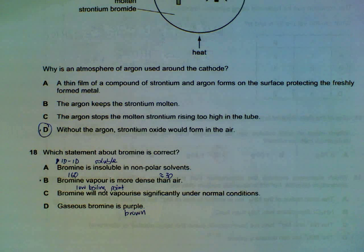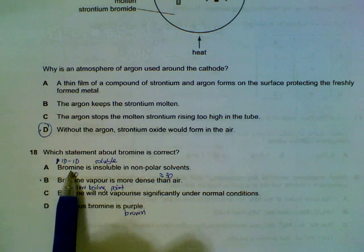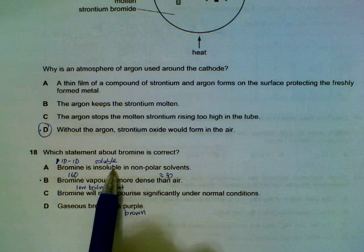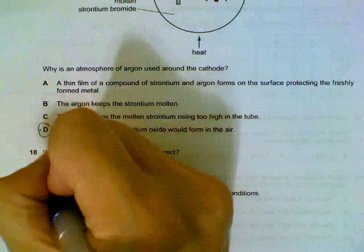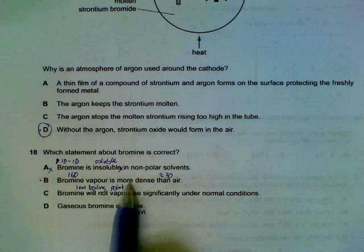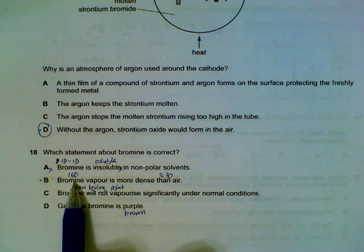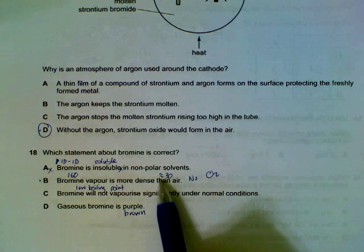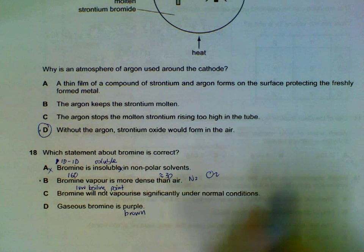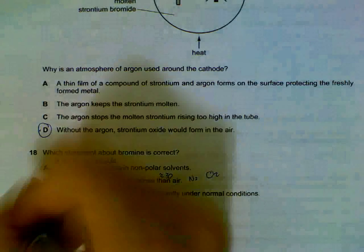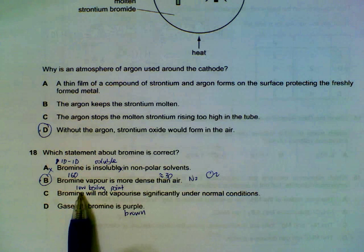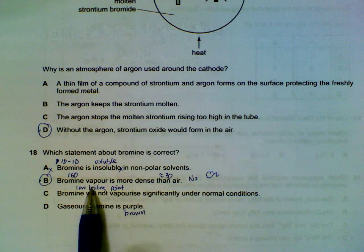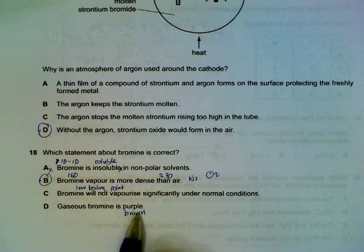18, what statement about bromine is correct? Bromine is a covalent, simple covalent compound, induced dipole interaction, so it will be soluble in non-polar solvents. So A is wrong. Bromine vapor is more dense than air. Bromine, if you look at the M-Round, is about 160, Br2. Air can be estimated to be somewhere between nitrogen and oxygen, so we estimate it by about 30, so it's much heavier than air. Bromine will vaporize easily because bromine has a low boiling point, and gaseous bromine is actually brown color.